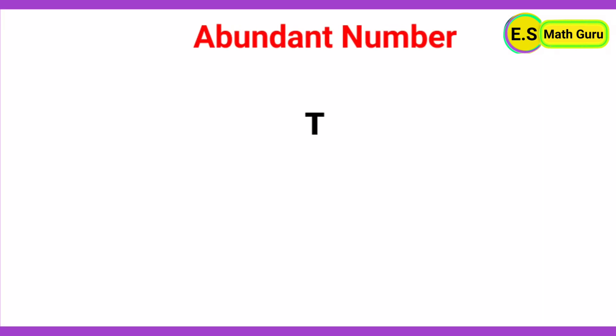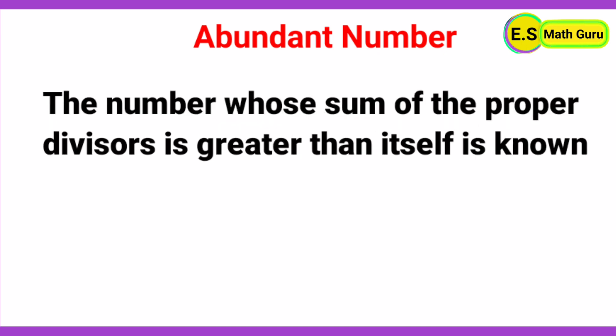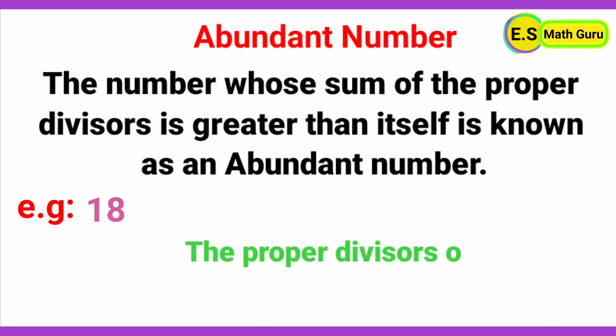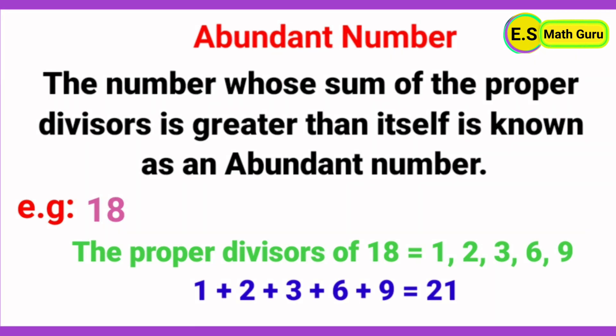Next, abundant number. The number whose sum of the proper divisors is greater than itself is known as an abundant number. For example, 18: the proper divisors of 18 are 1, 2, 3, 6, and 9. The sum of these proper divisors is 1 + 2 + 3 + 6 + 9 = 21. Here, the sum of the proper divisors 21 is greater than the number 18. Therefore, 18 is an abundant number.